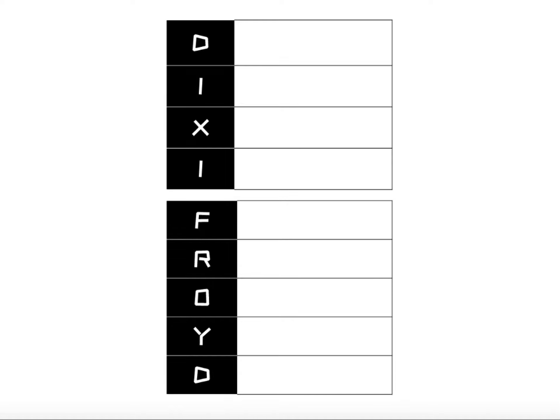Dixie Freud is an acronym that we use to remember which of our vocabulary words go together. The words in Dixie that start with a D, an I, an X, and an I go together, and the words in Freud that start with an F, R, O, Y, and D are all related.